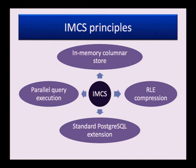IMCS provides parallel processing of some operations — mostly aggregation, filtering, and sorting can be done in parallel. IMCS uses RLE compression and some other compression techniques to reduce memory footprint. IMCS is a standard Postgres extension, so there is no need to change the Postgres core to use this functionality.